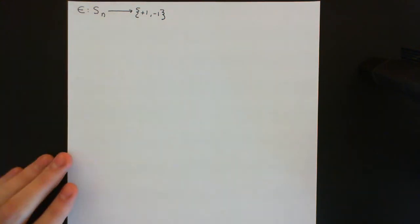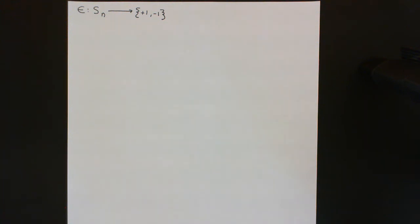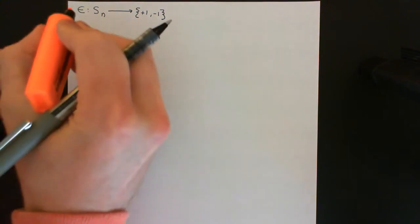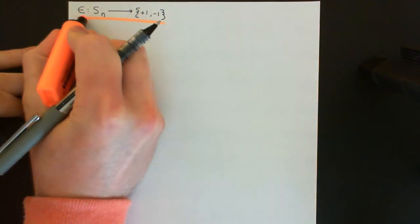The way we defined this is that you take your permutation and act it on the polynomial delta N, and you ask: when we act sigma on this polynomial, does it flip an even number of terms or an odd number of terms? If it flips an even number of terms we give it sign plus 1, and if it flips an odd number of terms we give it sign negative 1. That's where we got to in the previous video.